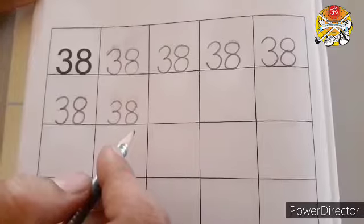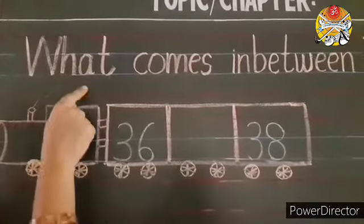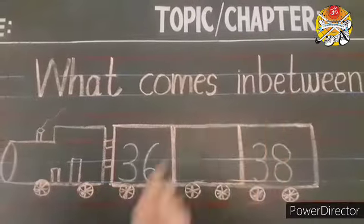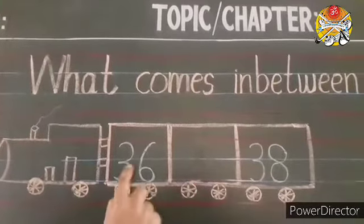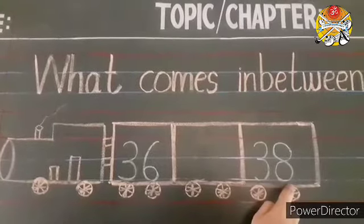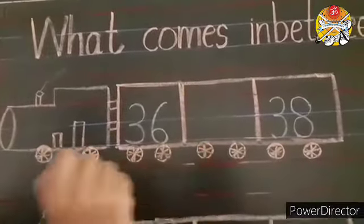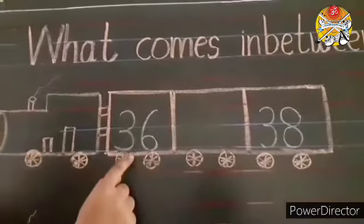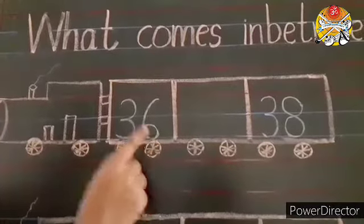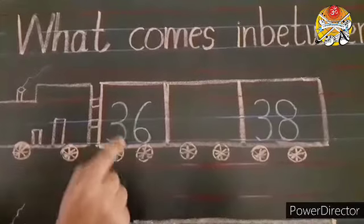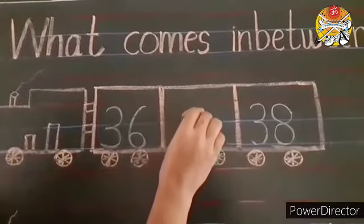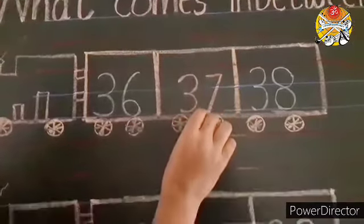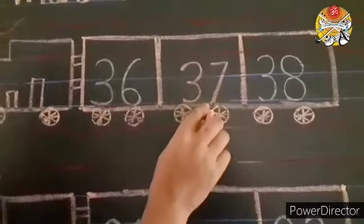Now let's do an activity. See children, what is written here? What comes in between? See children, here two numerals are given: 36 and 38. But one numeral is missing. So what we have to do? Yes, we have to write the in-between numeral. It is very easy children. See, this is numeral 36, and what comes after numeral 36? Yes, 37. So we will write here numeral 37. So 37 is the in-between numeral.